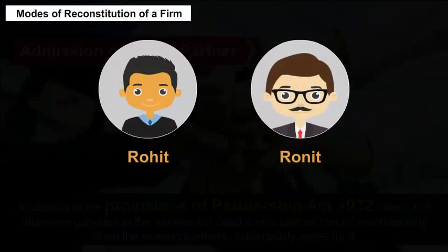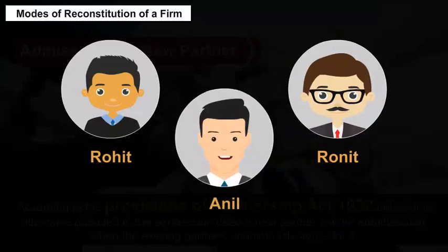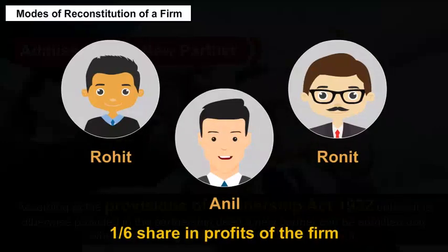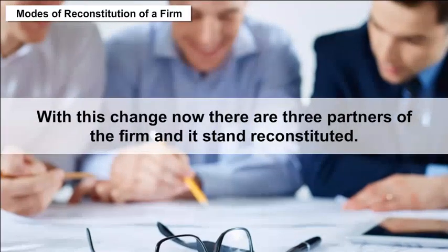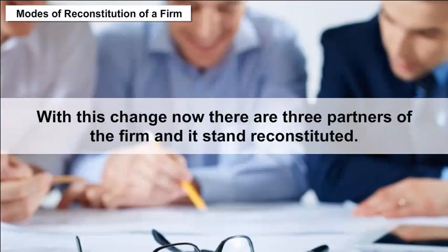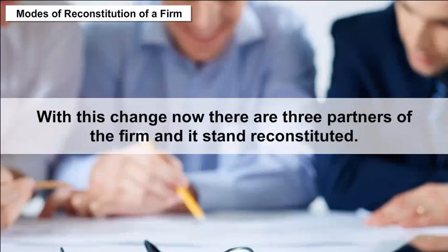For example, Rohit and Ronit are partners sharing profits in the ratio of 3:2. On April 1, 2007, they admitted Anil as a new partner with 1/6 share in profits of the firm. With this change, there are now 3 partners of the firm and it stands reconstituted.